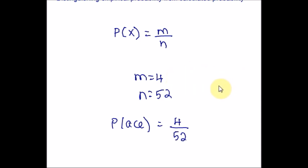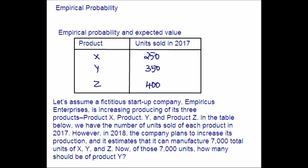Now, let me take an example and find the expected value. Here is an example problem to illustrate how calculating an empirical probability can be used to make predictions. Let's assume a fixture startup company, Empiricus Enterprises, is increasingly producing three products, X, Y, and Z. In the table, we have the number of units sold of each product in 2017. However, in 2018, the company plans to increase its production and it estimates that it can manufacture 7,000 total units of X, Y, and Z. Now, of those 7,000 units, how many should be product Y? That is the question.